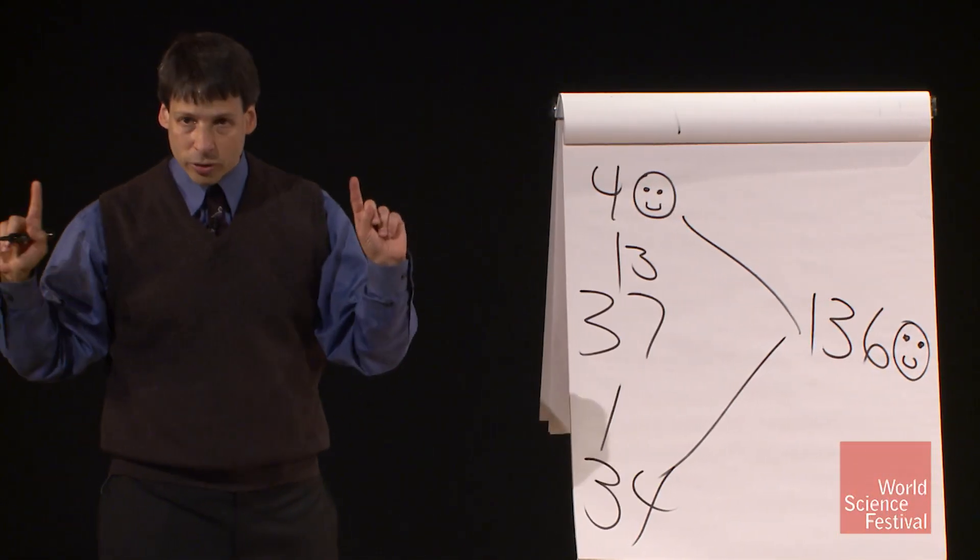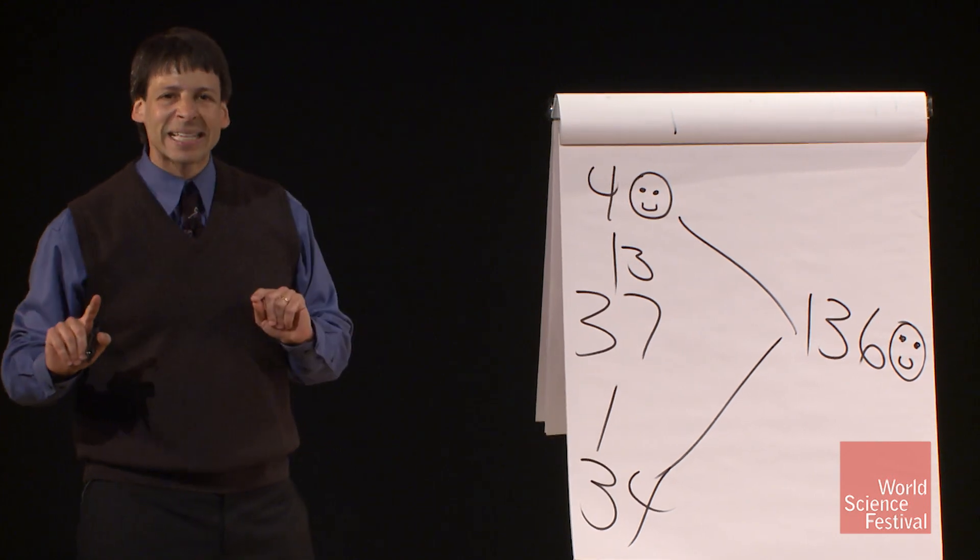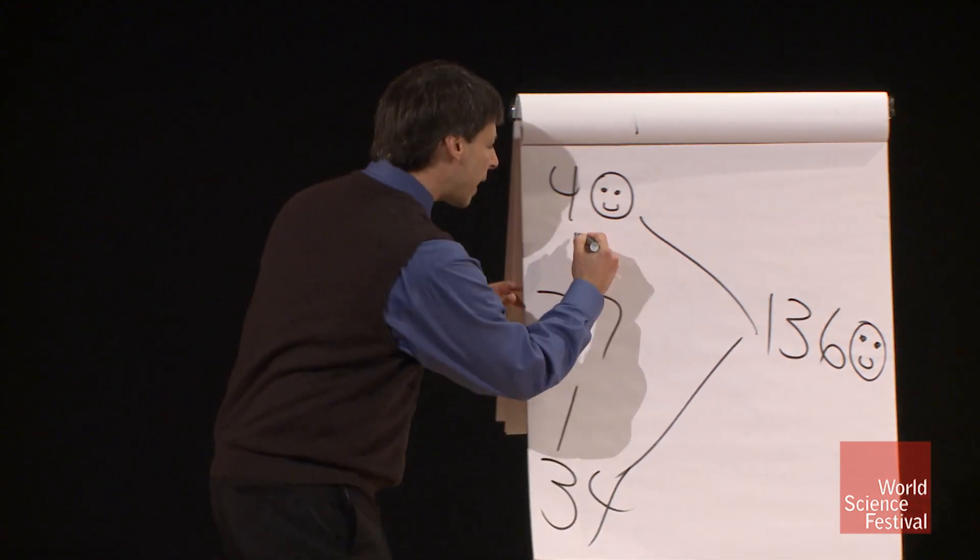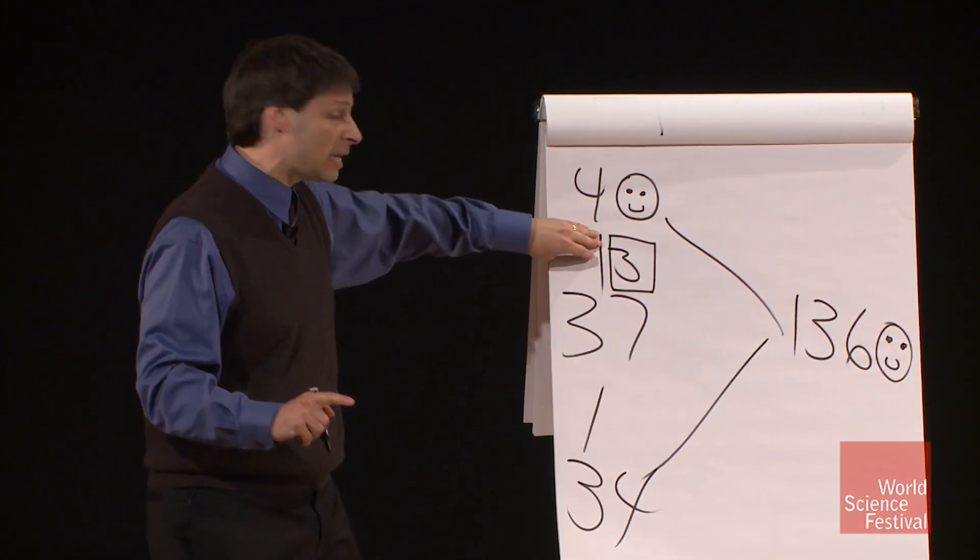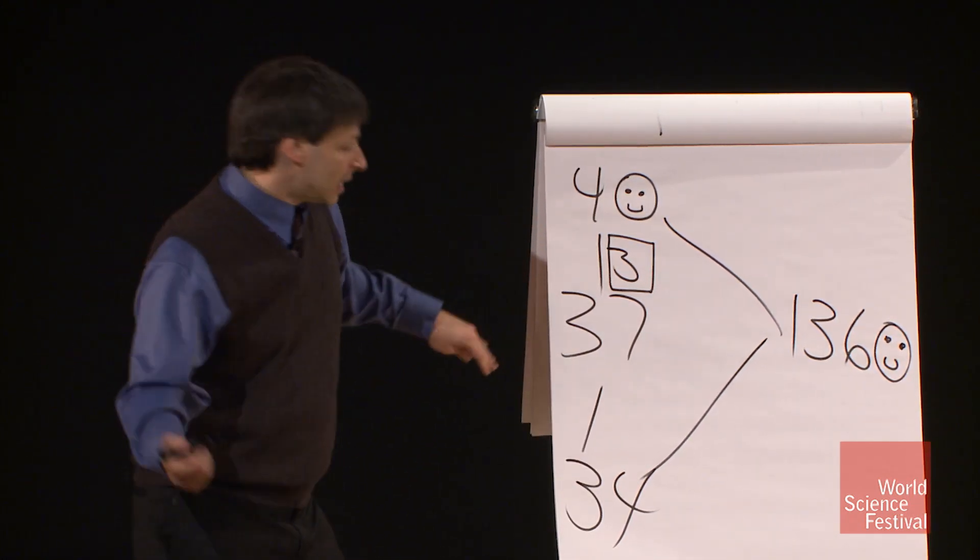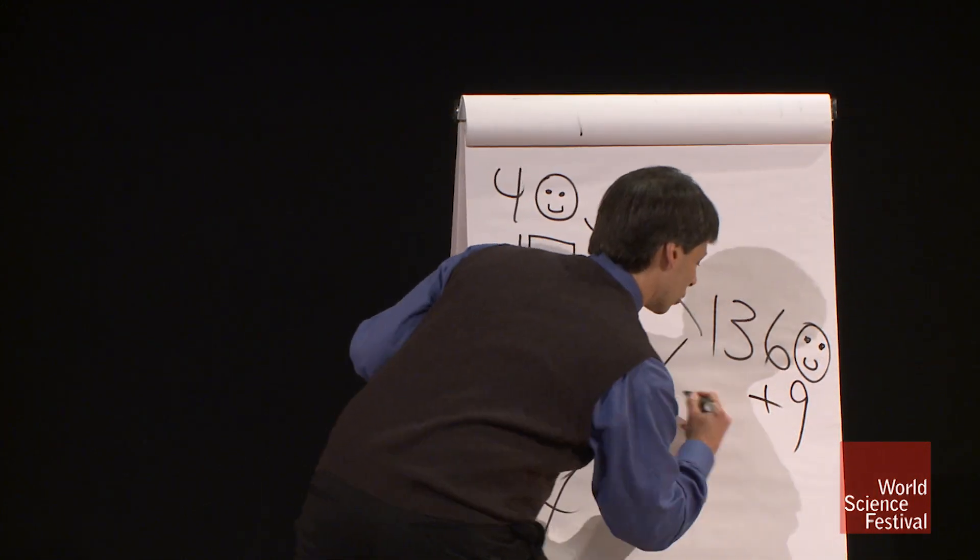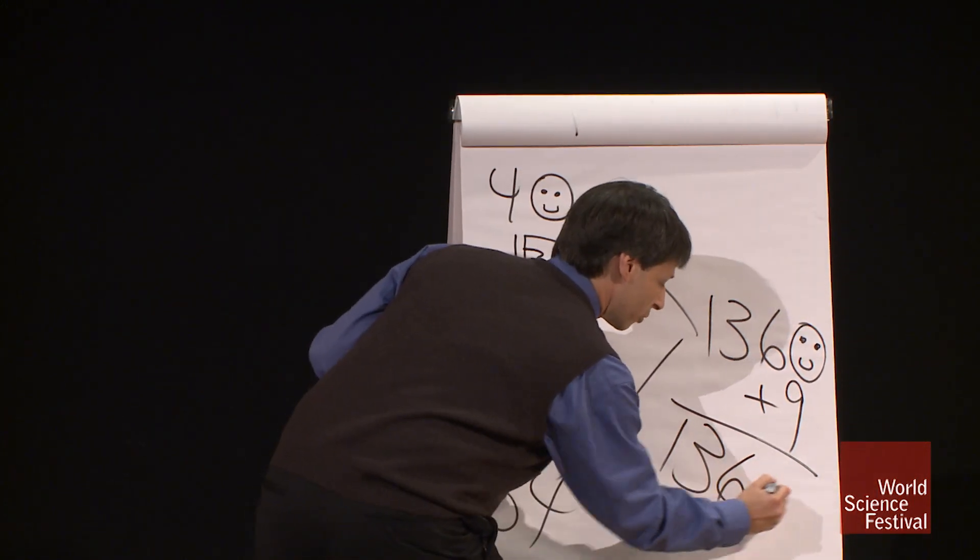And we're almost done. All we have to add to this is the square of the number that we went up and down. We went up and down 3. 3 squared is 9. And there's your answer, 1,369.